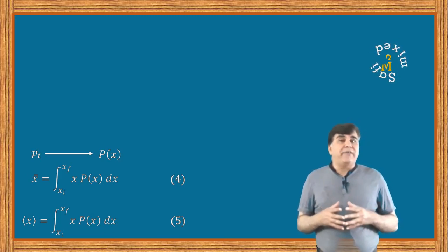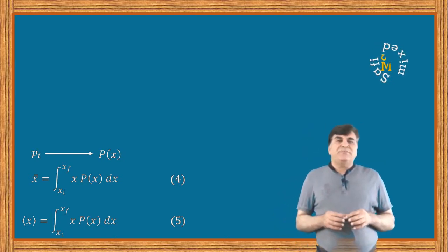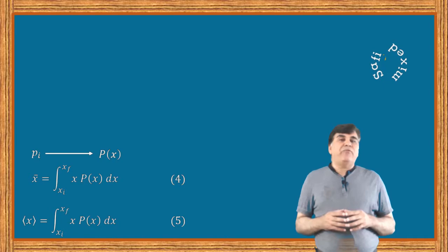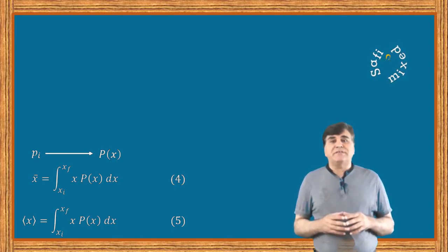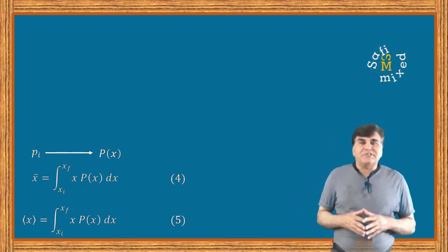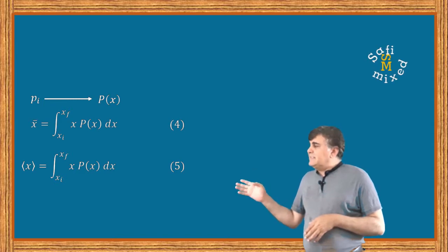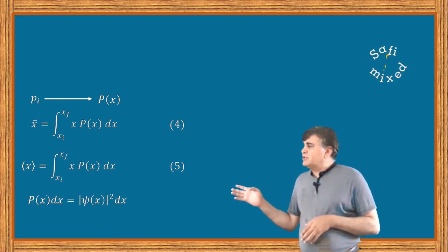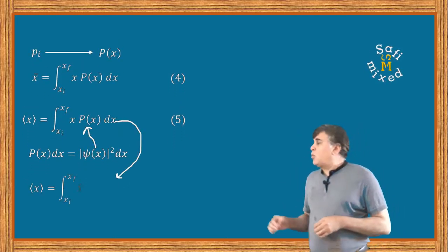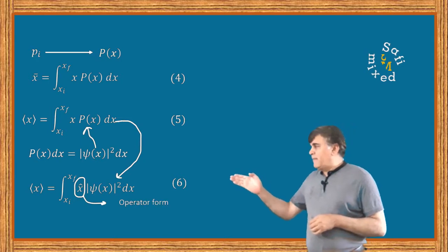Extending equation 5 to the realm of quantum mechanics is straightforward, because a measurement of position corresponds to the position operator, and the modulus square of the wave function corresponds to the probability density. If you don't know about this property of the wave function, I suggest you watch my video on the interpretation of the wave function. So we can write p of x dx equals the modulus square of the wave function times dx. Replacing this in equation 5, we can write the quantum mechanical expectation value in terms of the modulus square of the wave function.